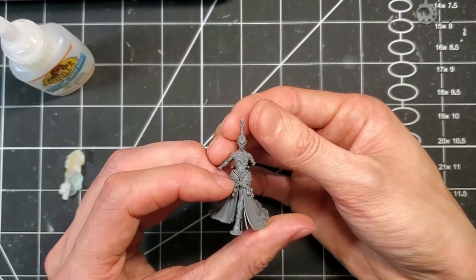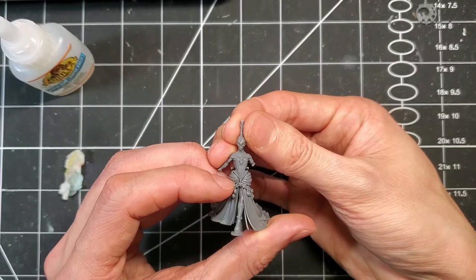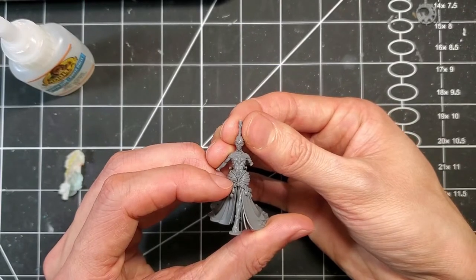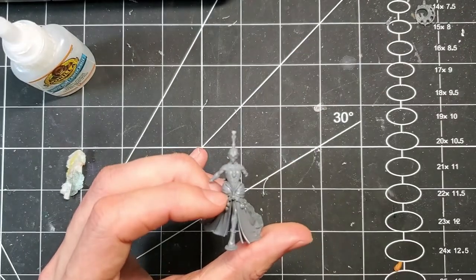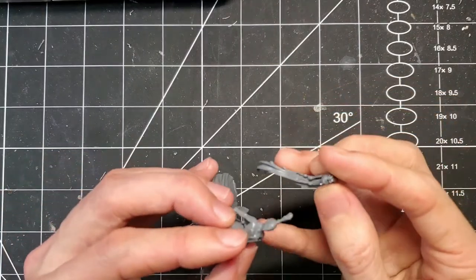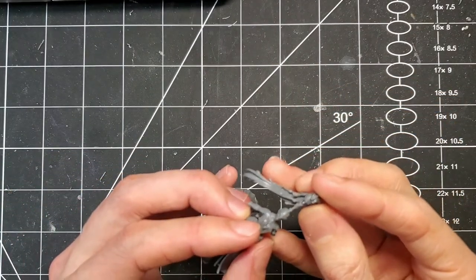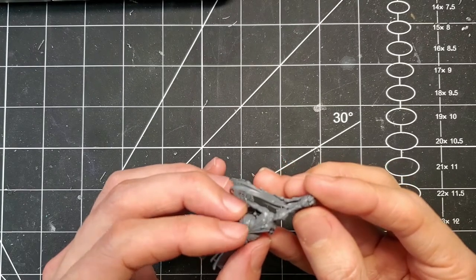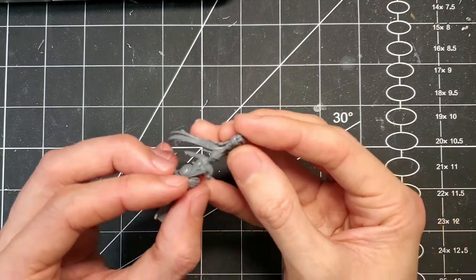One tip I find useful for head swaps like this too is there's a surprising amount of difference it can make from turning to look a certain way. This one I just wanted the straightforward look of someone who is entirely in control of the situation and doesn't care about what's going on around them, but a simple look to the left or right can really change the demeanor of the model.